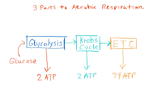Carbon dioxide gas is produced as a waste product from the Krebs cycle, so we'll write CO2 right there. And since we're talking about aerobic respiration, we will show oxygen gas entering the electron transport chain here.